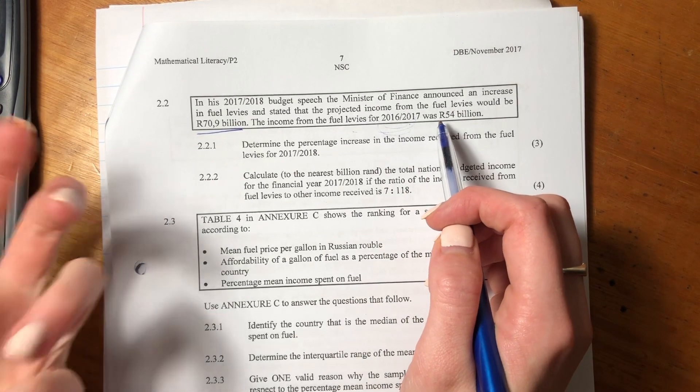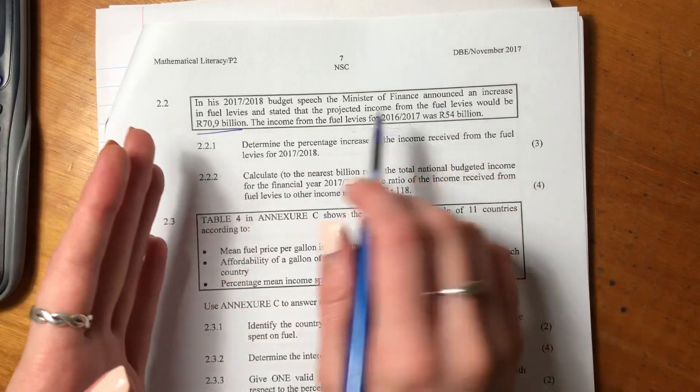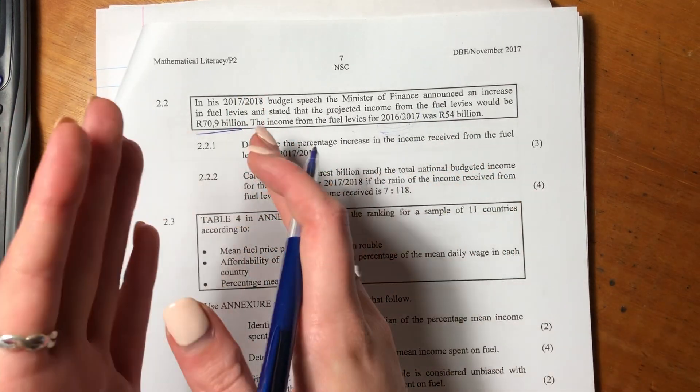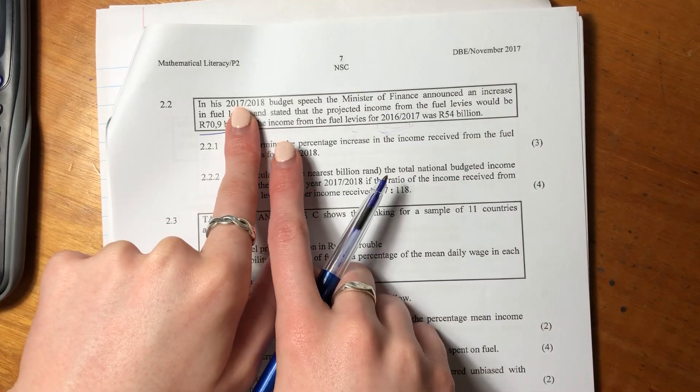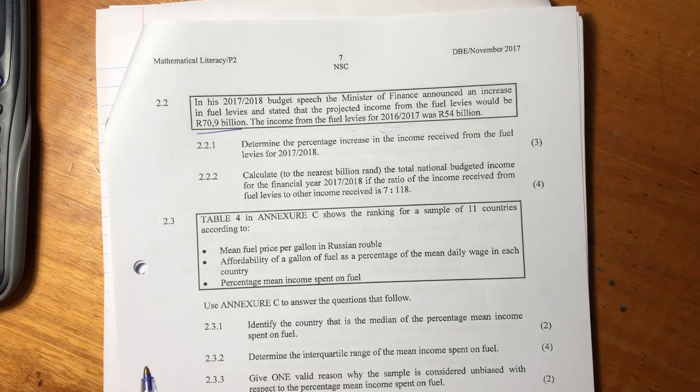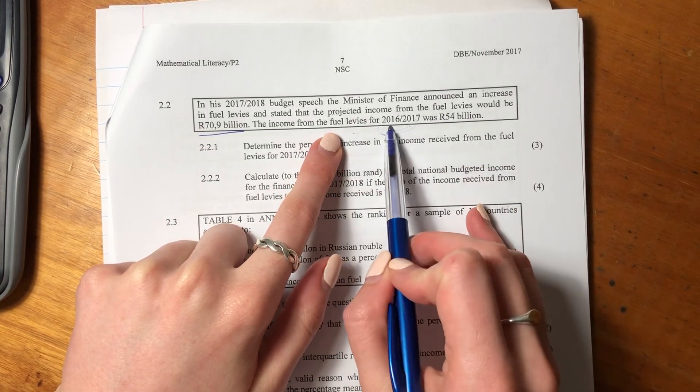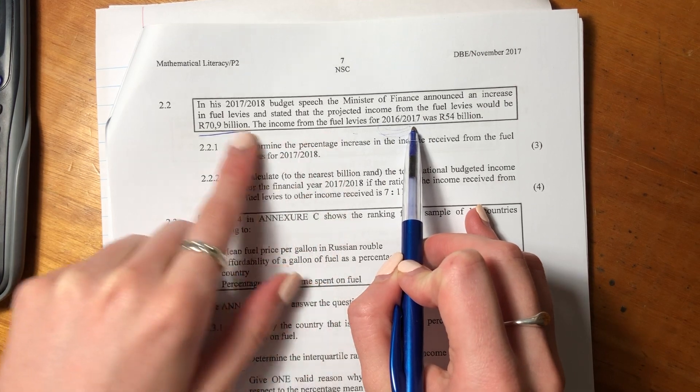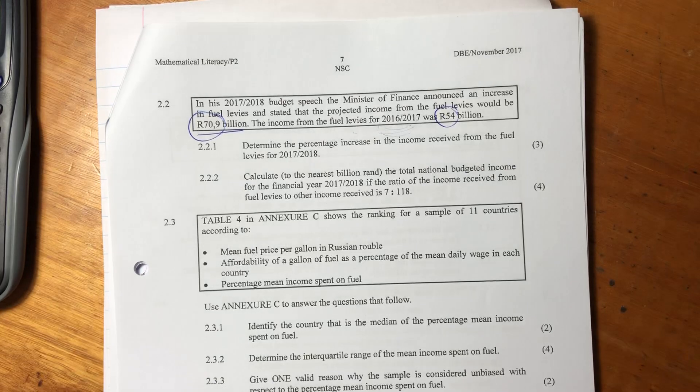Now, I've said this in a previous video, but just remember that the budget speech is generally made in March, and that's why we go from sort of March to end of Feb the next year. That's why it's over two years, just so that you don't get confused. So we see that the fuel levies are going to go up between 2016-2017 year and 2017-2018 year, from 54 to 70.9.